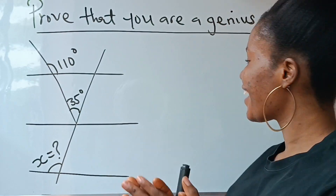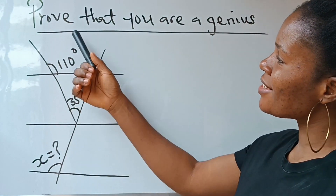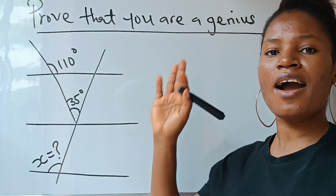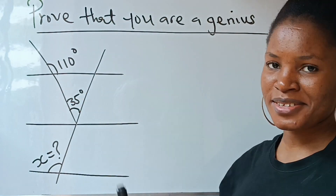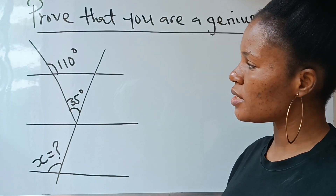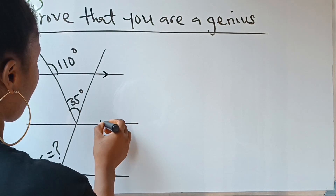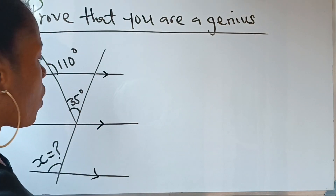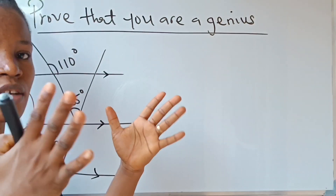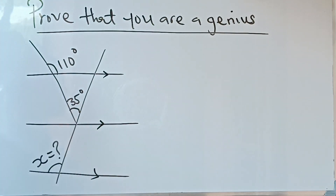Hi everybody, welcome to my channel. They say we should prove that you are a genius — that's right. We are asked to find the value of x. These three lines are parallel to each other, meaning no matter how far you draw them, they will never join. Now we have to find the value of x.